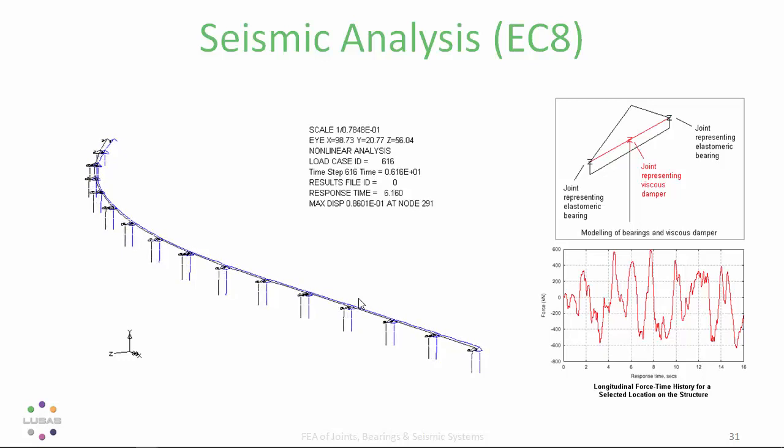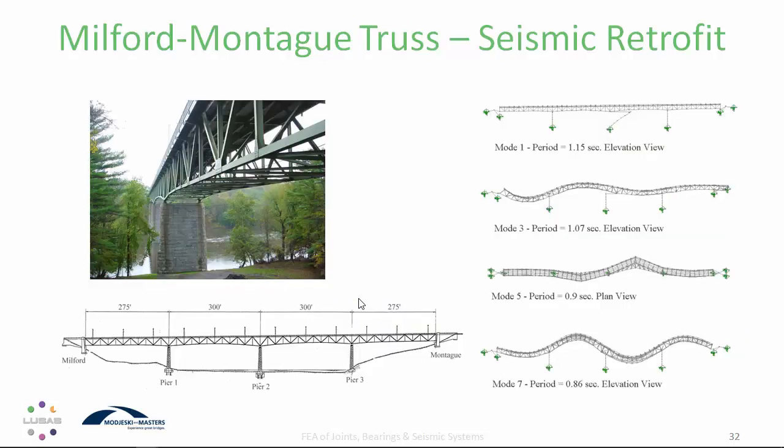Good correlation of results was achieved for both the spectral response and transient dynamic analysis, verifying the modelling techniques and viscous damping capabilities of LUCIS. A similar global model was used to define a retrofit strategy for the Milford–Montague truss connecting New Jersey to Pennsylvania across the Delaware River, incorporating elastoplastic lock-up devices at the Montague abutment and guided isolation bearings at the piers, with existing fixed bearings retained at the other abutment.